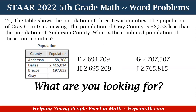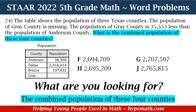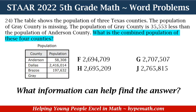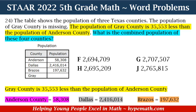Now to answer this question, the first thing we need to do is ask ourselves what are we looking for. We are looking for the combined population of the four counties. Now that we know what we're looking for, what information can help us find the answer? The information that can help us is that Great County is 35,553 less than the population of Anderson County, and also that Anderson County, Dallas County, and Brazos County populations are very important because we have to find the combined or total population of the four counties.